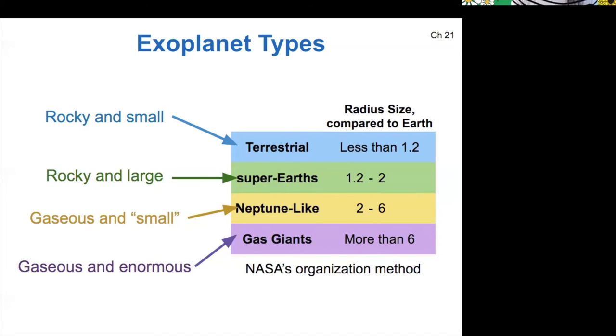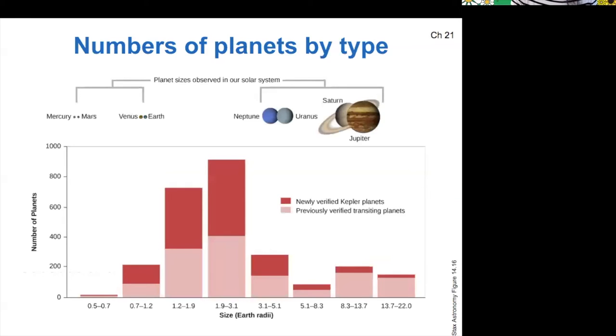All right. If we look at the number of planets by the type that they are, we can make a histogram like this. This is a figure from your book.